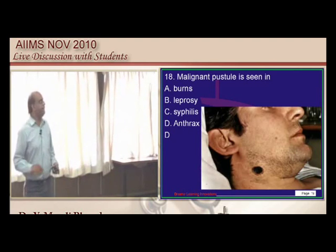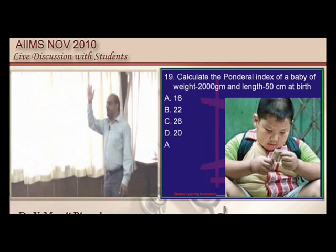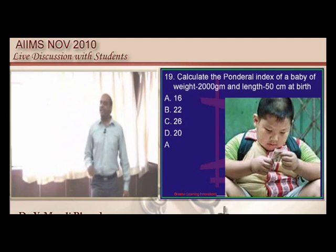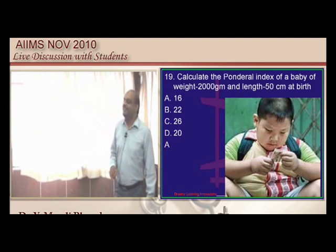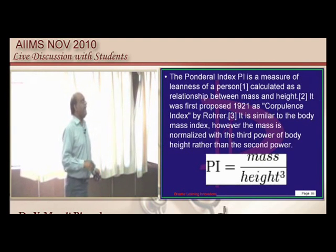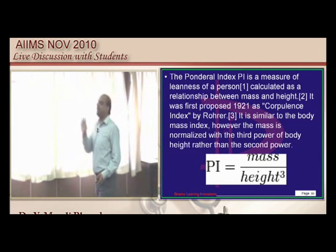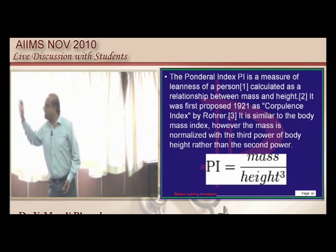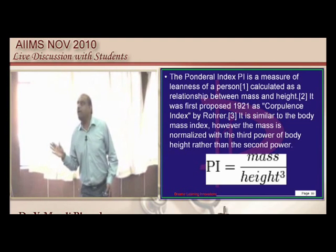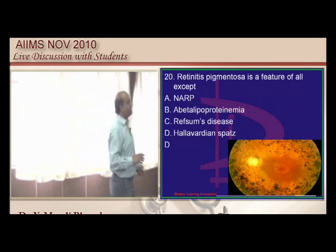Anthrax is basically malignant pustule. The examiner is bored about Broca's index and wants to give the ponderal index. The ponderal index is basically weight in kilograms divided by height in meters cubed. Generally we use Broca's index in adults and ponderal index in pediatrics.